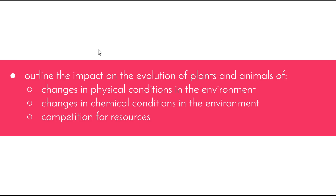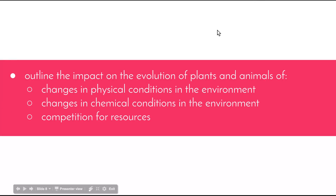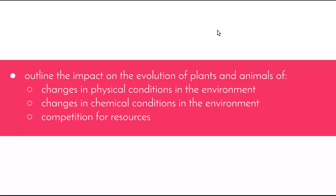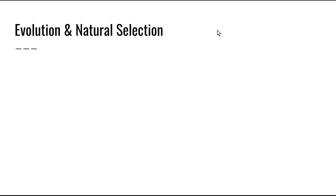Welcome to this video in the Blueprint of Life topic. Today this video is going to be looking at the syllabus dot point: outline the impact on the evolution of plants and animals of changes in physical conditions in the environment, changes in chemical conditions in the environment, and competition for resources. We're going to look at each one of these three on their own and look at specific Australian examples of both plants and animals.